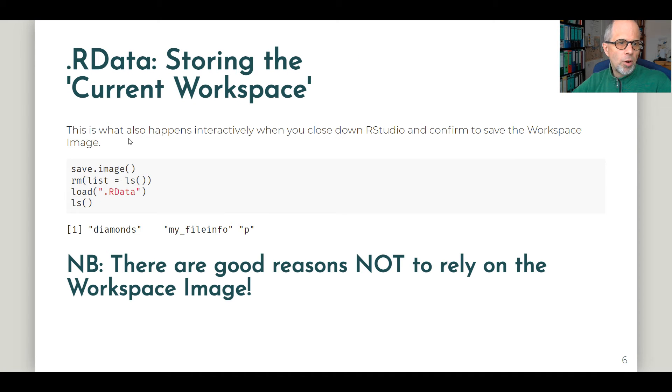You might rather know the .rdata file type without a filename before the dot, maybe from storing the current workspace. This is exactly what happens interactively when you close down RStudio and then you confirm to save the workspace image. We can also do that programmatically using the save.image function. And then again, as before, I remove all the objects from my global environment and I load this .rdata file. This is what RStudio does by default. When you start RStudio, if you haven't changed the settings, then you see that again we get these three objects back: the diamonds dataset, my custom function my_fileinfo, and this p object, the plotly diagram.